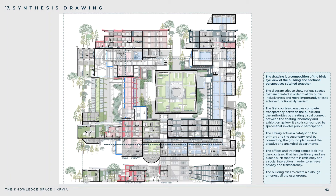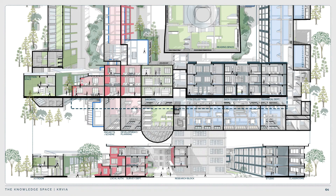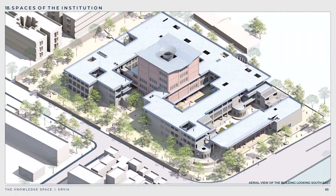This drawing is a composition of the bird's eye view of the building and sectional perspective stitched together. The diagram tries to show various spaces created to allow public inclusiveness and achieve functional dynamism. The first courtyard enables complete transparency between the public and authorities by creating a visual connection between the floating laboratory and the exhibition gallery, surrounded by spaces that involve public participation. The library acts as a catalyst on both primary and secondary levels, connecting ground planes and creative and analytical departments. The offices and training centers look into the courtyard, creating social interaction while maintaining privacy and transparency.